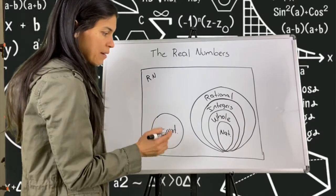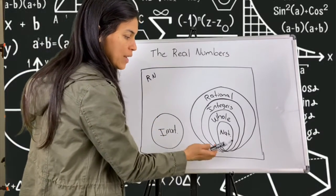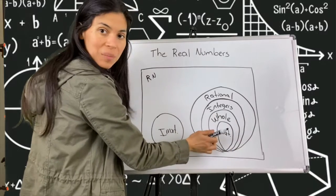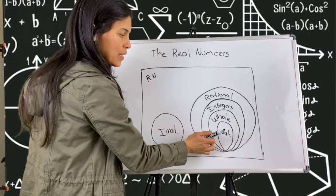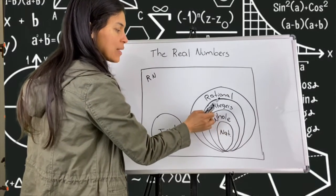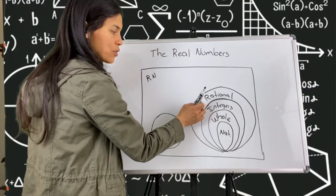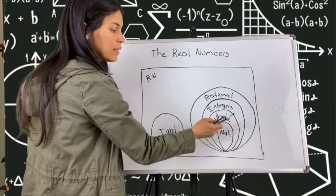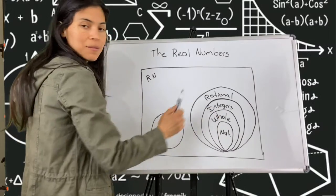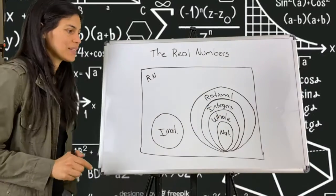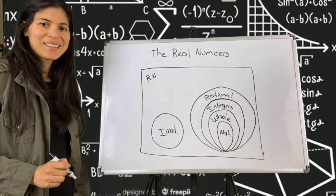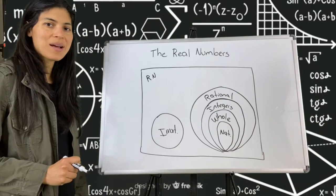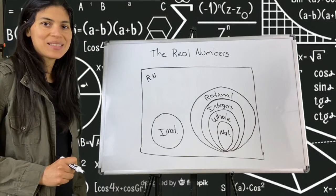From this graph you can notice that all natural numbers are whole numbers as well — they are included. And all whole numbers are integers, and all integers are rational. All of these are rationals, and each one is included in the following circle. Now go ahead and work on your worksheet, and I hope that you have some fun. Have a good day!